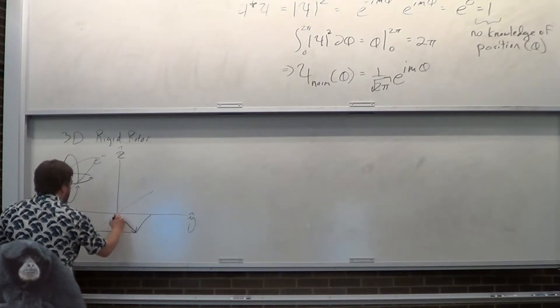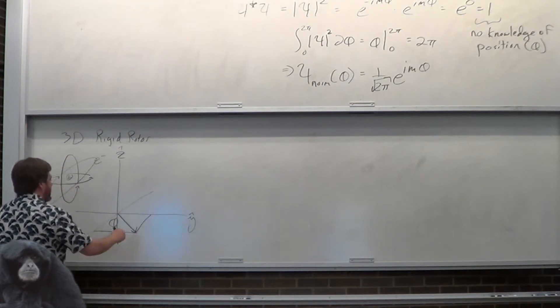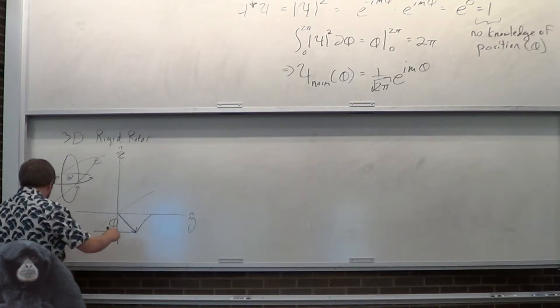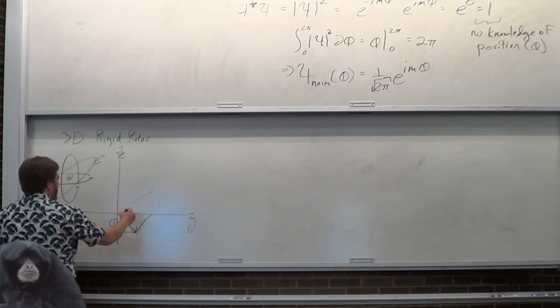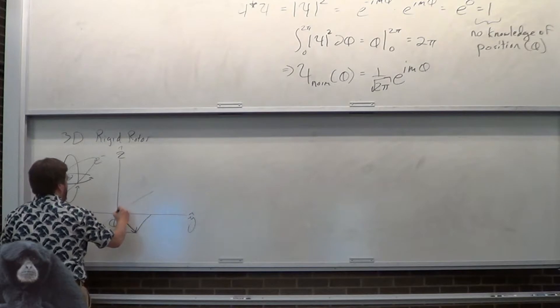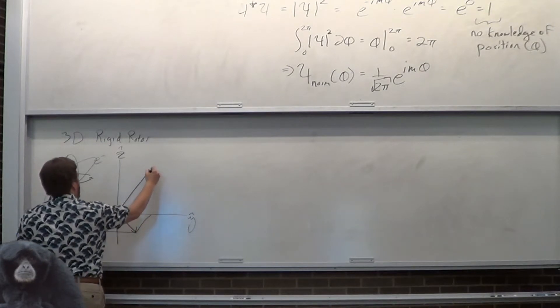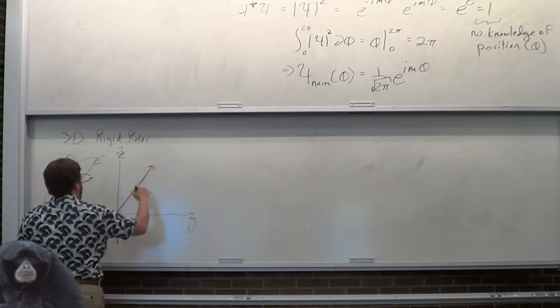This angle, just like before, is still phi. But now, this is the projection into the XY plane. This is our actual vector.